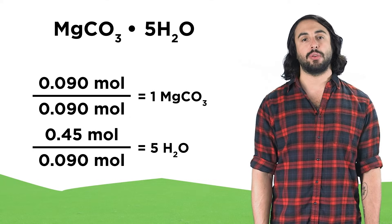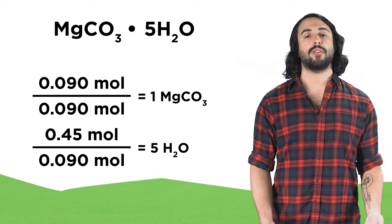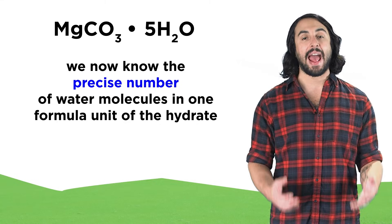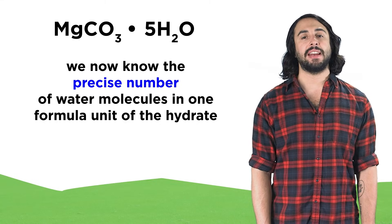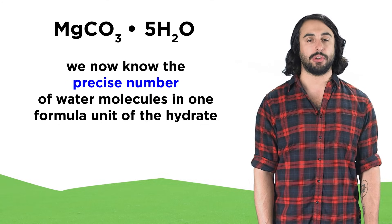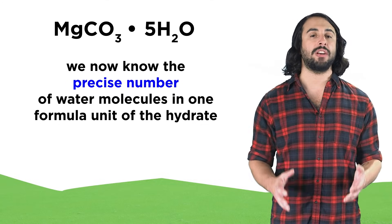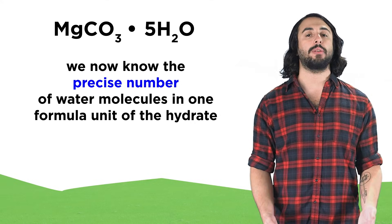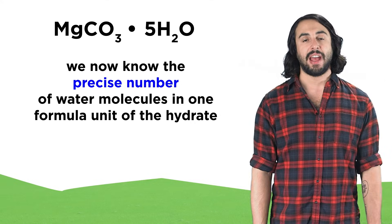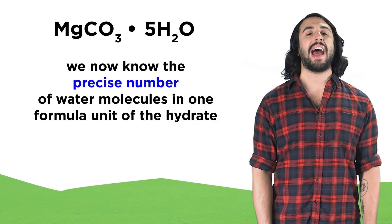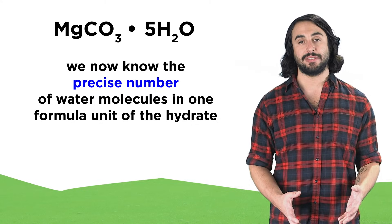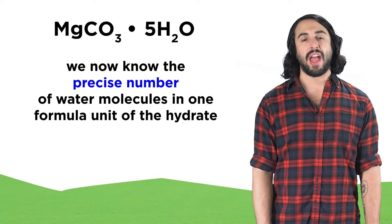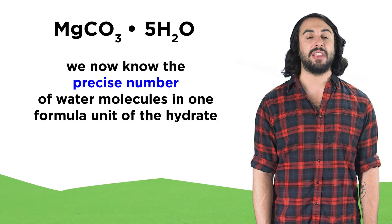That will allow us to write the complete formula for this hydrated salt, because where we may have had to include an X before, indicating that we did not know the number of water molecules associated with one formula unit of this substance, we can now accurately place a 5 here as the coefficient for water, because we have empirically determined that there must be five water molecules for every formula unit of the ionic solid.